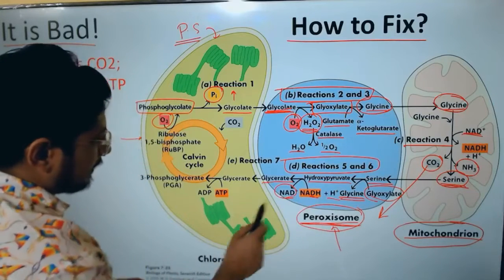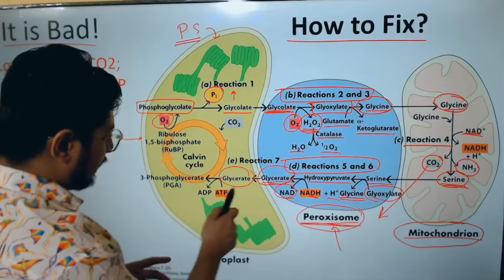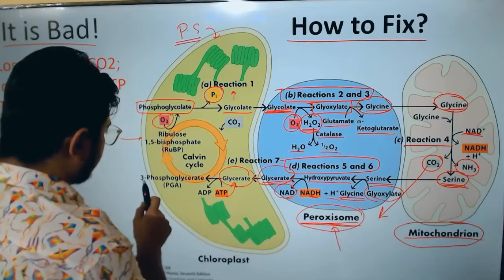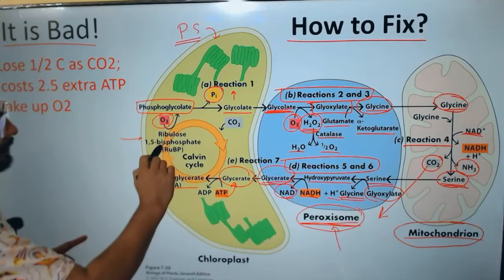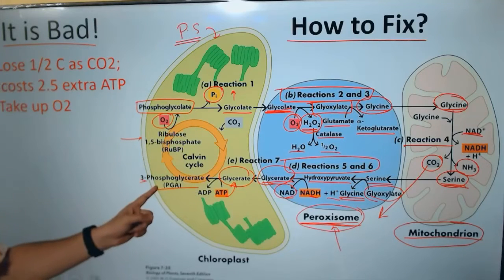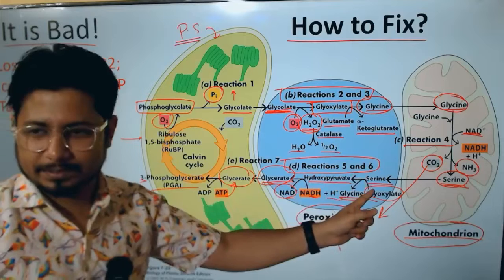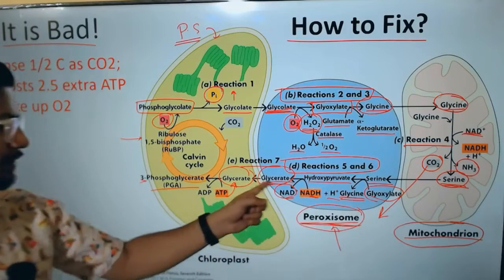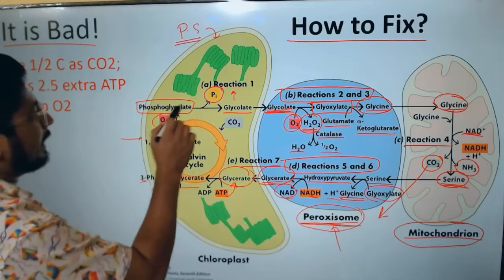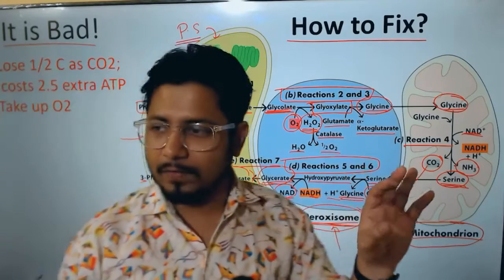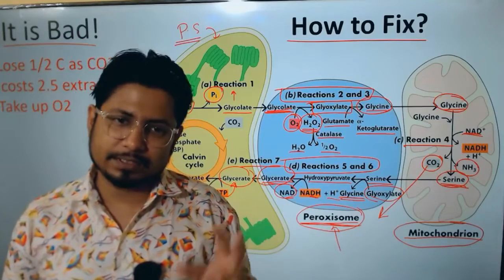Hydroxypyruvate is reduced to glycerate, with NADH being oxidized back to NAD+. The glycerate is transferred back to the stroma of the chloroplast, where a phosphate is attached to produce 3-phosphoglycerate. So the single step in normal CO2 fixation actually requires seven steps in photorespiration — involving the peroxisome and mitochondria — just to produce the same 3-phosphoglycerate that would normally be produced directly.